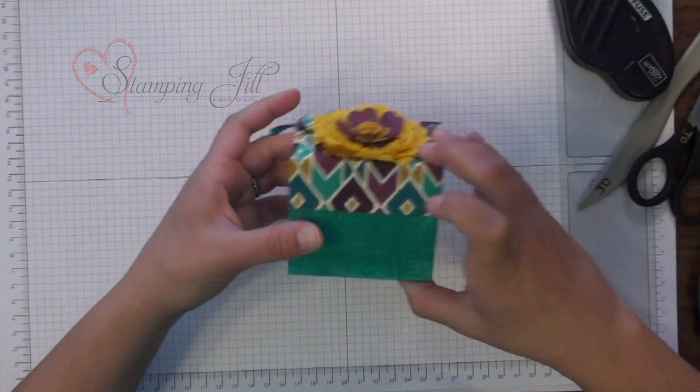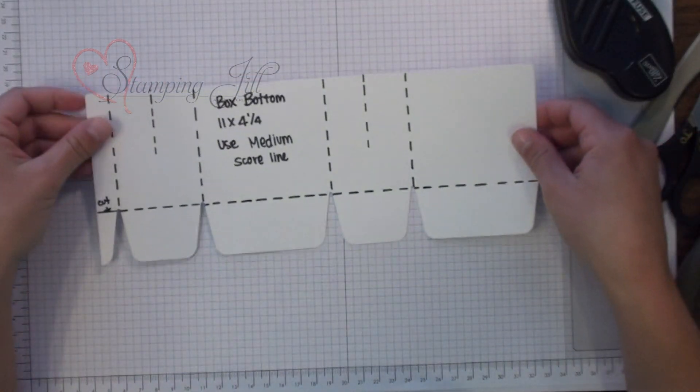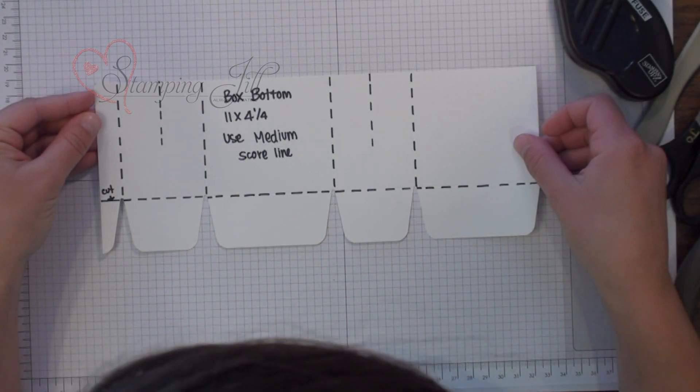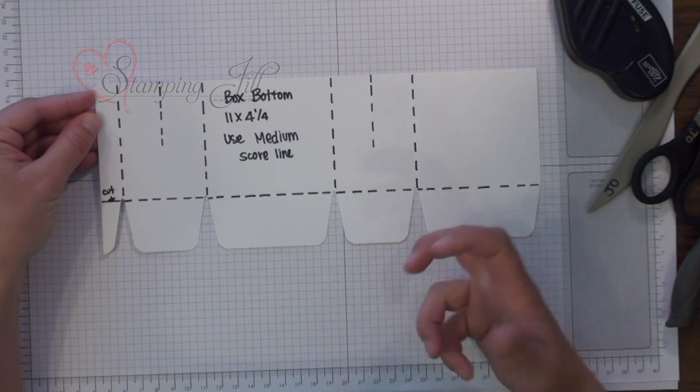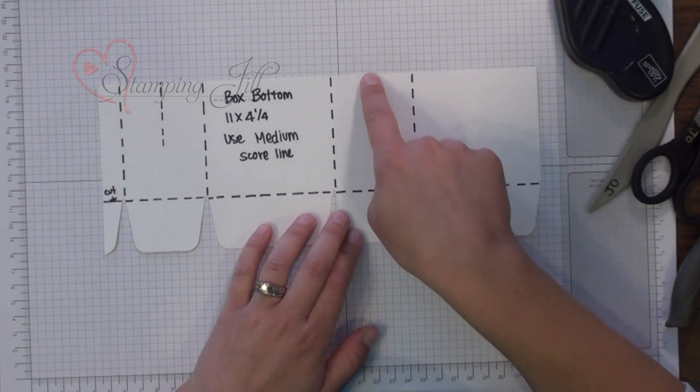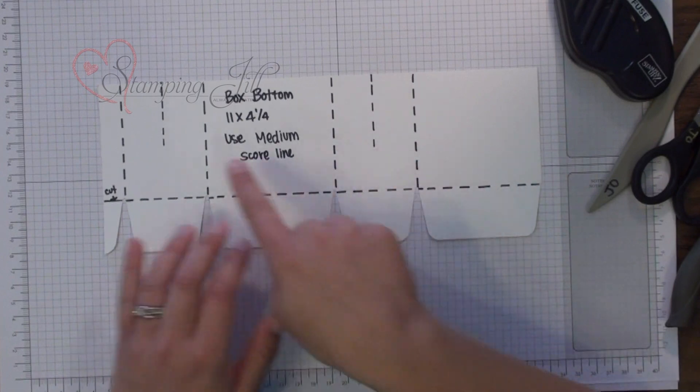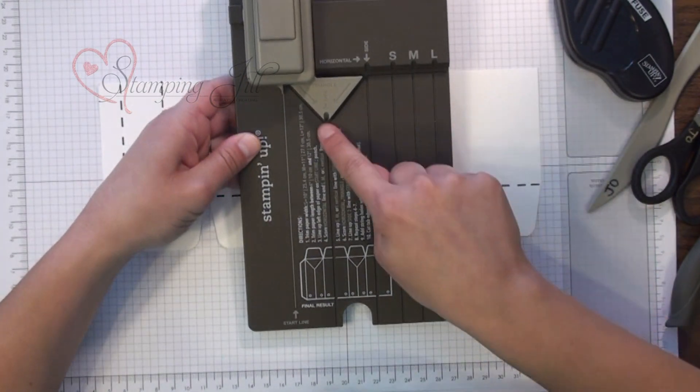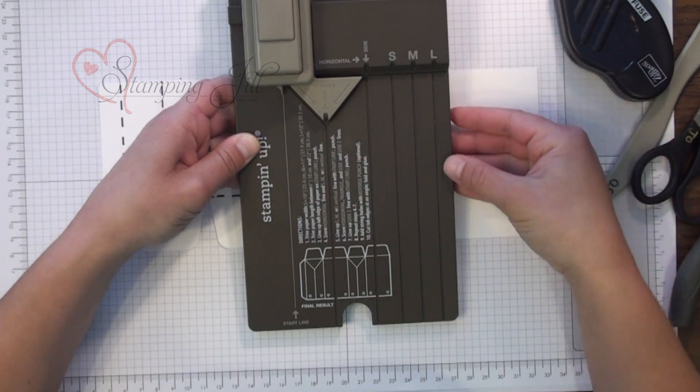So to do this box you need two pieces of paper. The bottom piece is an eleven by four and a quarter piece of paper and you can see on this you do it like you would do any medium score line box except I didn't do the gussets on the bottom. You score this line and this line which if you look on the gift punch board it would be this line but you don't do the gussets on it so you don't have the bag part of it.